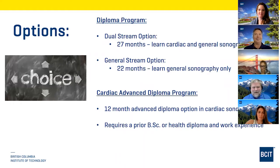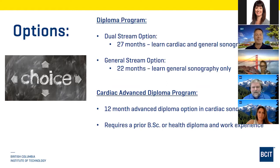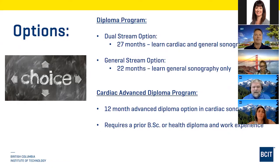We have a number of options within our program. First, we have our diploma program with a dual stream option, which includes both cardiac and general sonography — that program is 27 months in length. You're part of a cohort with the general stream as well, which is 22 months in length, where you learn about general sonography only. The first year you take common courses together, and in your second year you begin to stream into your specialties — general courses include abdomen, superficial structures, vascular sonography, as well as obstetrics and gynecology. The dual stream takes all those plus cardiac sonography.